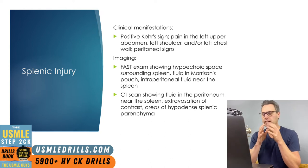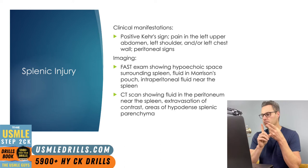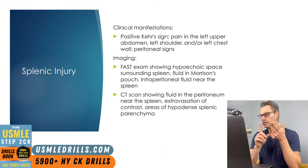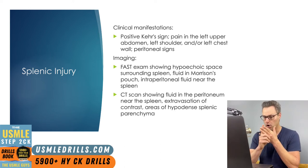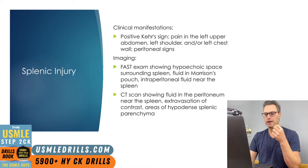Areas of the spleen that are hypodense may also be present, and this indicates the presence of a possible intraparenchymal or subcapsular hematoma, or a general disruption of the splenic parenchyma.